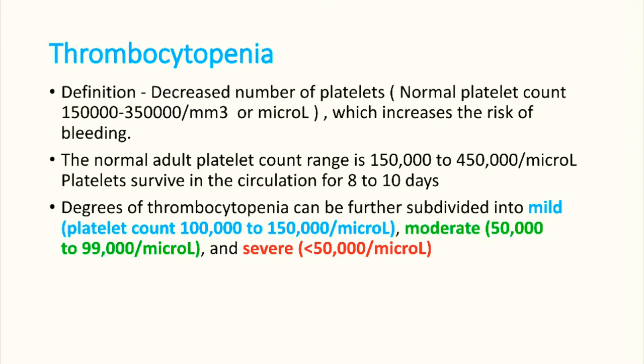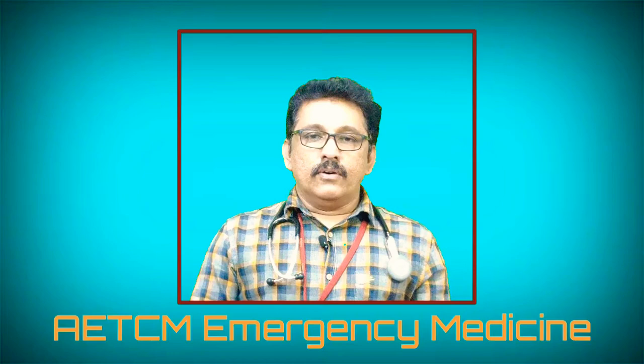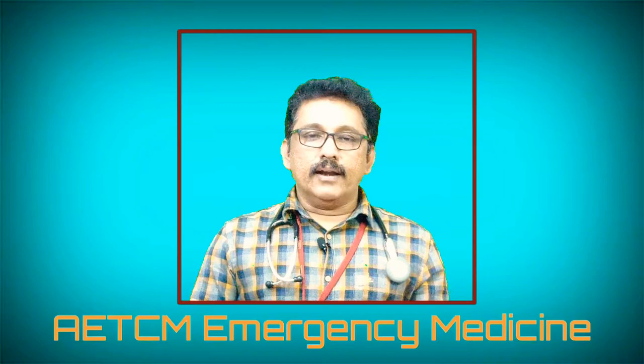Normal platelet count range is around 1,55,000 to 3,50,000 per cubic millimeter. When platelets drop below 1,50,000 we call it thrombocytopenia. It is divided into three major classifications: mild is 1,00,000 to 1,50,000; moderate is 50,000 to 99,000; and severe is less than 50,000.